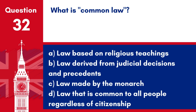Question 32. What is common law? A. Law based on religious teachings. B. Law derived from judicial decisions and precedents. C. Law made by the monarch. D. Law that is common to all people regardless of citizenship. Answer: B. Law derived from judicial decisions and precedents. Common law in the UK is based on legal precedents and judicial decisions.